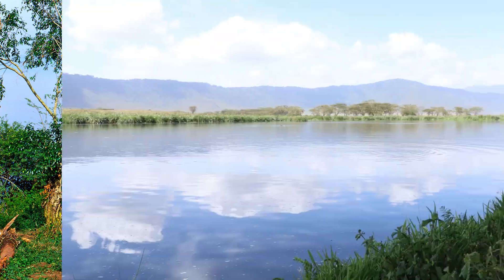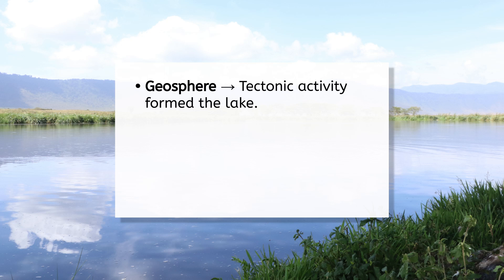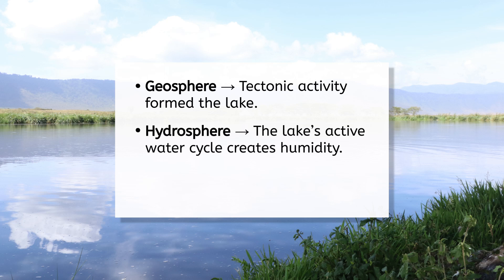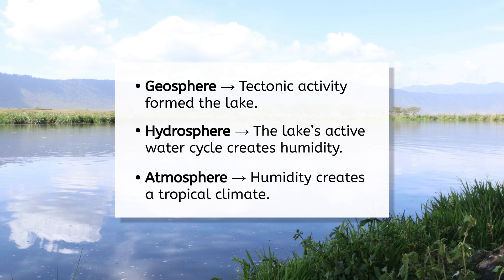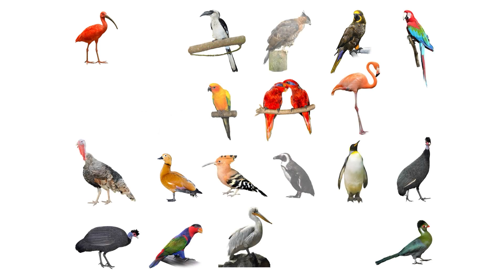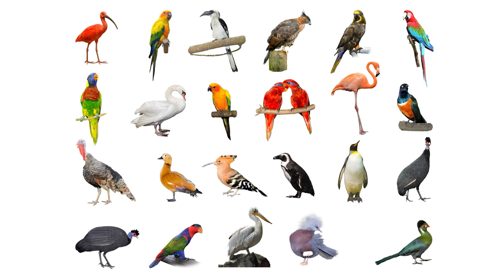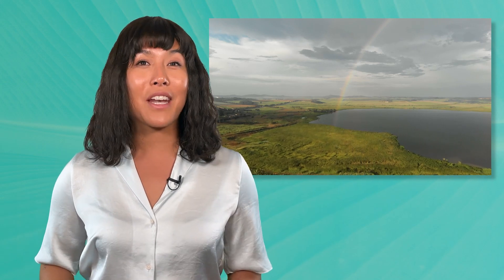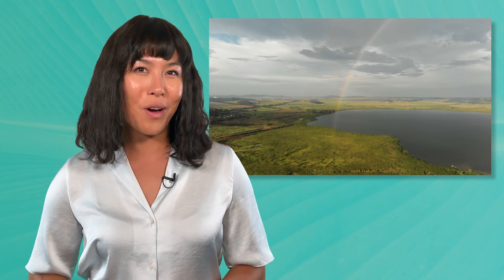As we went through the lesson today, we saw how the atmosphere, hydrosphere, and geosphere all influence the biosphere of the Lake Victoria ecosystem. The lake formed from tectonic activity in the geosphere, and the active water cycle of the hydrosphere has formed a warm, humid atmosphere with a tropical climate. These conditions are ideal for life, but high biodiversity also means high levels of competition between species. Until next time, remember the biosphere is all around us. So keep diving into this web of life and exploring its wonders. Stay curious, keep asking questions, and I'll see you next time.